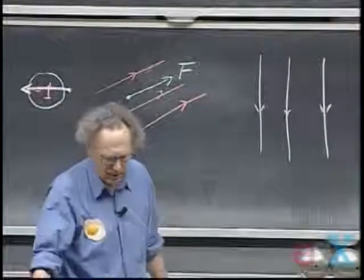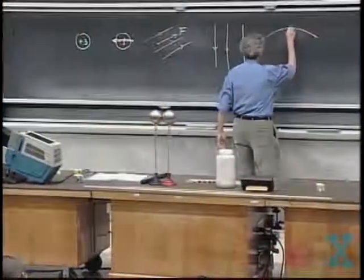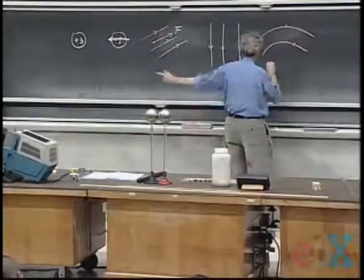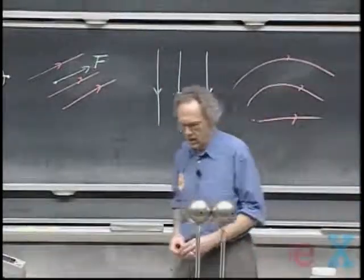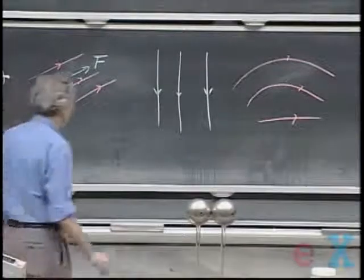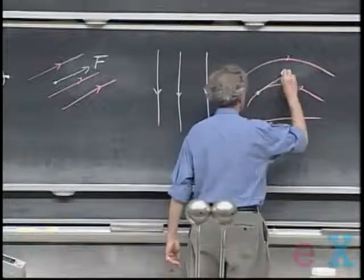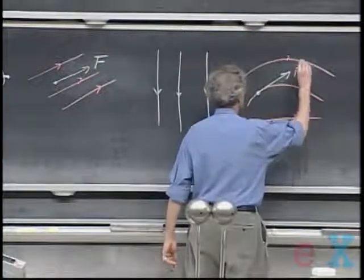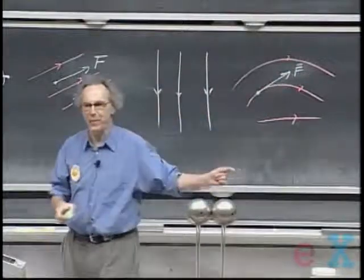But suppose now that the field lines are curved. So here are field lines, as you have seen in those configurations, it's very common. If now I release a charge in here, say I have a point charge here, it will experience a force in this direction, so it will get an acceleration in this direction, so it will immediately abandon that field line.